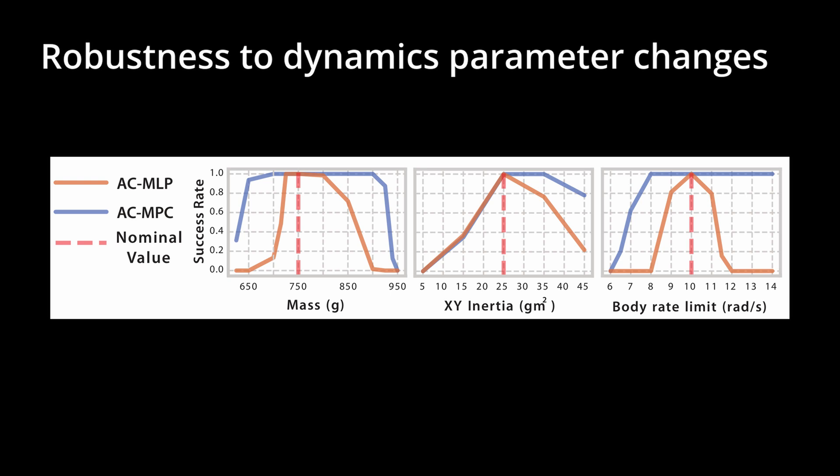Additionally, we run an experiment where the main dynamics parameters are varied for both ACMLP and ACMPC. We measure the success rate on the split-S track as a function of the variation of these parameters and observe how ACMPC is able to adapt significantly better to these changes without any retraining. This is due to the fact that ACMPC has access to the dynamics of the system.